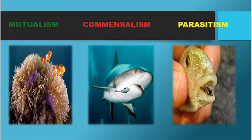Here are examples of mutualism, commensalism, and parasitism. Under mutualism, as you can see in the picture, is a coral and a herbivorous fish — the Nemo. The coral provides shelter for the Nemo fish, and in return, the Nemo fish protects the coral from natural enemies such as seaweeds. In this case, both organisms benefit.